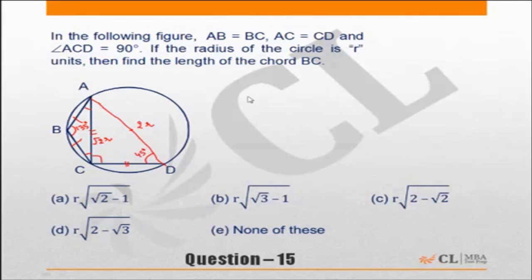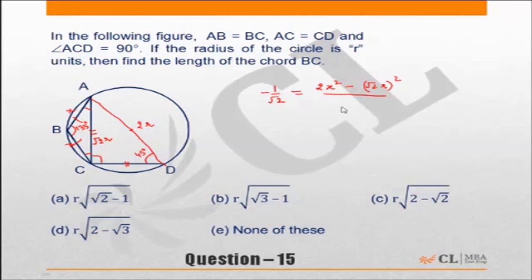We can apply the cosine formula here. Cos of 135 degrees equals minus 1 by root 2, since cos(90 + 45) equals minus 1 by root 2. Let the dimension BC we need to find be x. Then using the cosine rule: minus 1 by root 2 equals x squared plus x squared minus 2r squared, divided by 2x squared. Simplifying: minus 2x squared divided by root 2 equals 2x squared minus 2r squared.